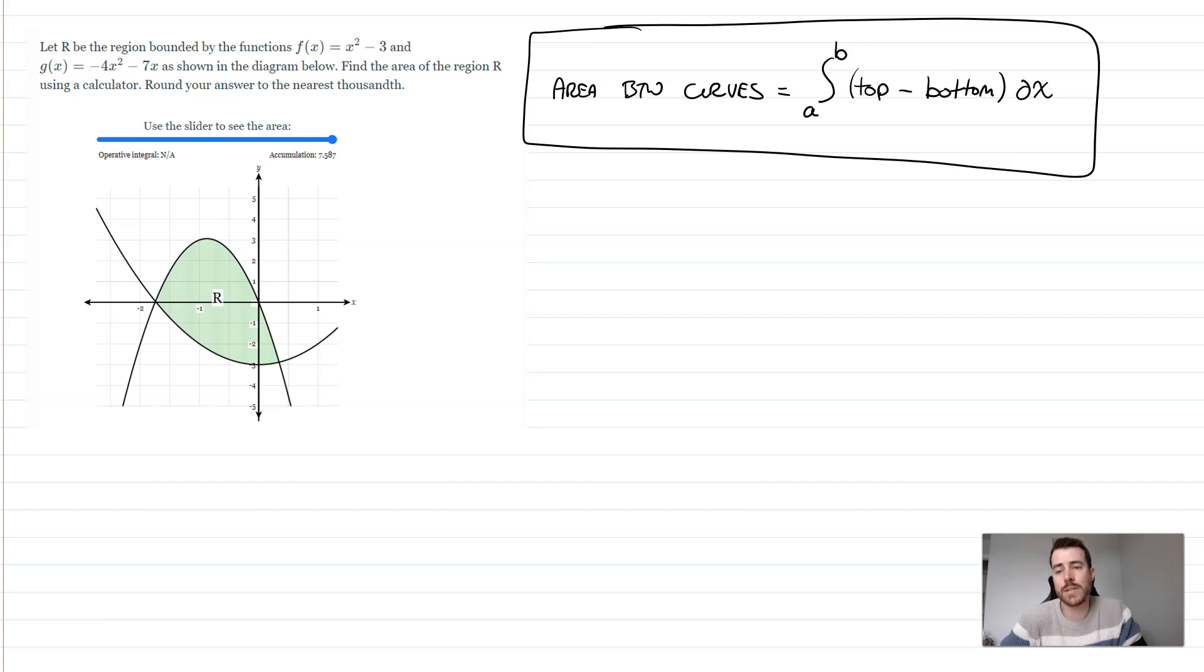Now look at the problem that we have here. It says, let R be the region bounded by the functions f(x) = x² - 3 and g(x) = -4x² - 7x, as shown in the diagram below. Find the area of region R using a calculator and round your answer to the nearest thousandths.